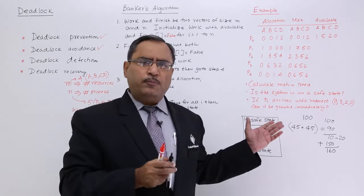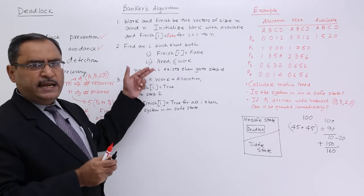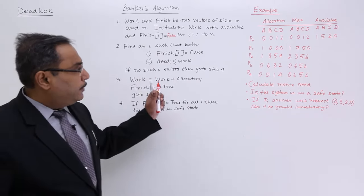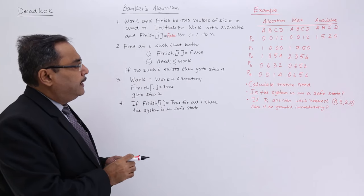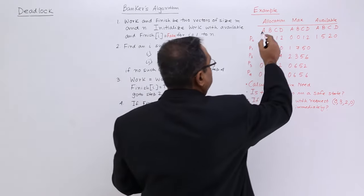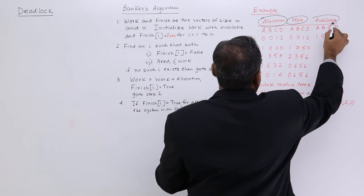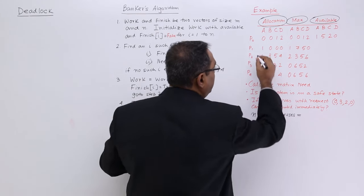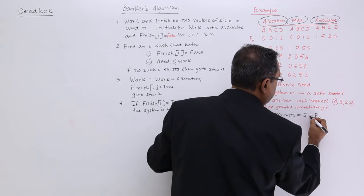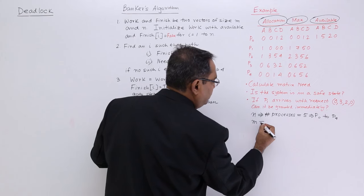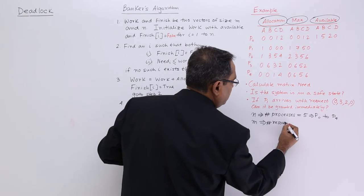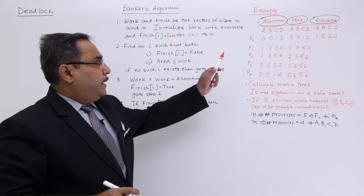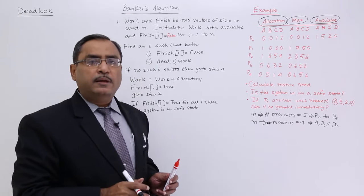This algorithm will get clear if you go for the numerical problems. So let me go for the numerical problems and I shall be following each and every step. We are having 3 matrices: one is allocation, another one is max, and another one is available. Number of processes n = 5 (P0 to P4), and number of resources m = 4 (A, B, C, D).